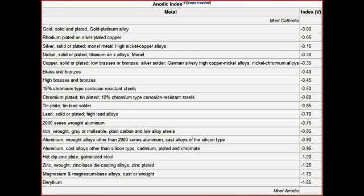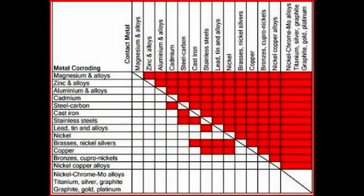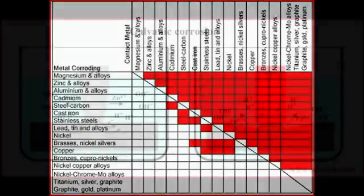Here's a thing called an anodic index. An anodic index is essentially a table listing all the affinities of metals for electrons. Here is a sequence of red squares on a white background. The red squares represent bad metal combinations — the metals on the left-hand column that should not go with the right-hand column have their intersecting red square highlighted. This may sound confusing, but that's because I'm a scientist.